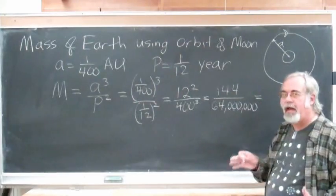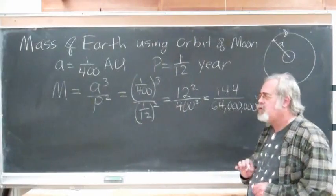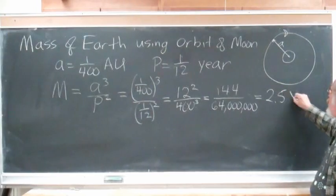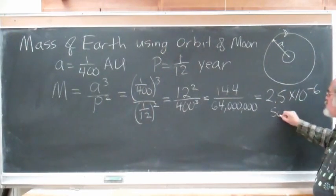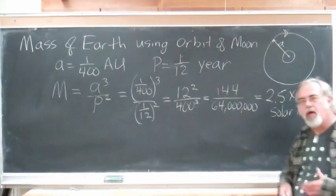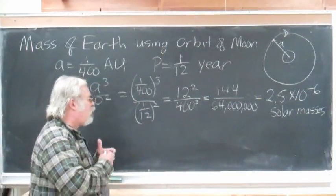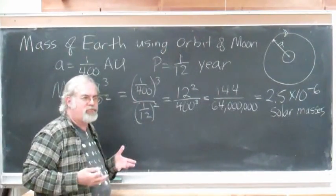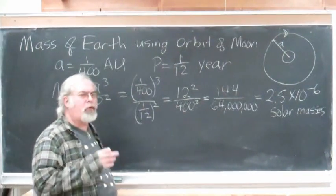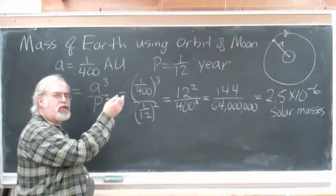Now, if you divide that out, which I would probably use a calculator at this point, you get 2.5 times 10 to the minus 6 solar masses. So, that is the mass of the Earth in terms of the mass of the Sun.